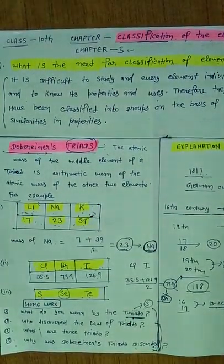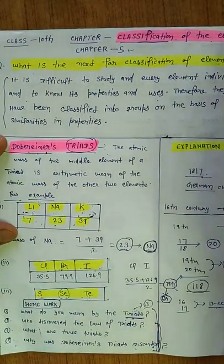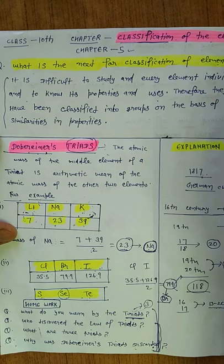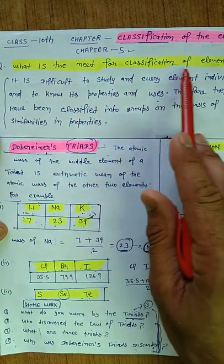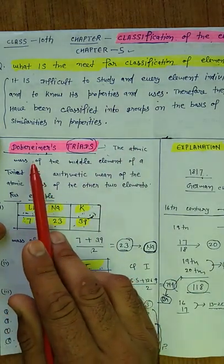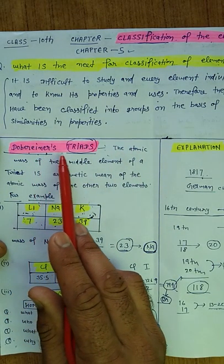Good morning students. You know our preceding chapter is the classification of the elements. So abhi tak is chapter ke andar humne pada ki what is the need for the classification of the elements and first classification is taken by the Dobereiner triads.